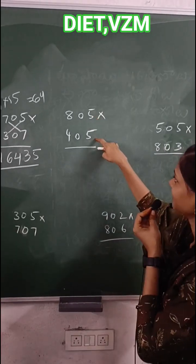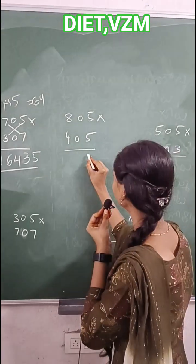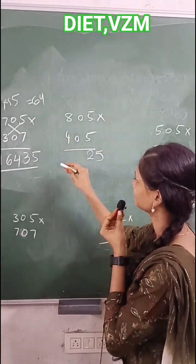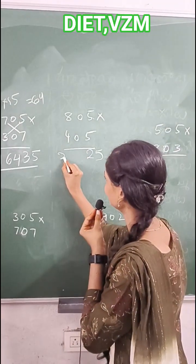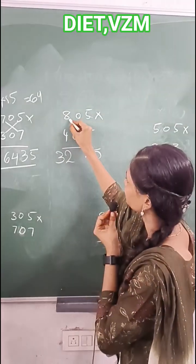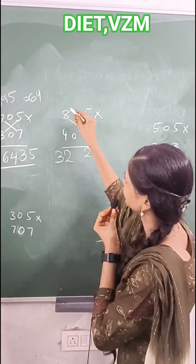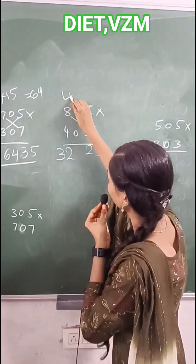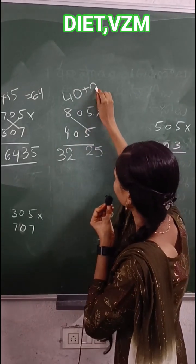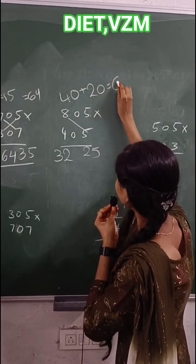Now the cross product. 5×5 is 25. 4×8 is 32. Cross product: 5×8 is 40. Plus 4×5 is 20. 60.